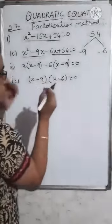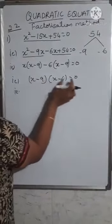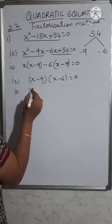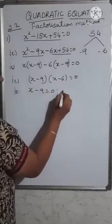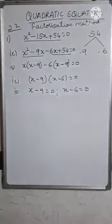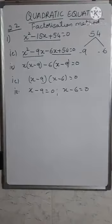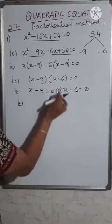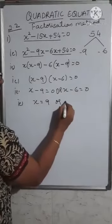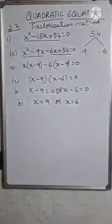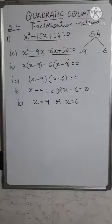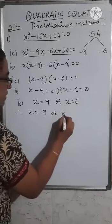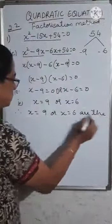This gives (x - 9)(x - 6) = 0. Since the product of two terms equals 0, either x - 9 = 0 or x - 6 = 0. Therefore x = 9 or x = 6 are the roots of the equation.